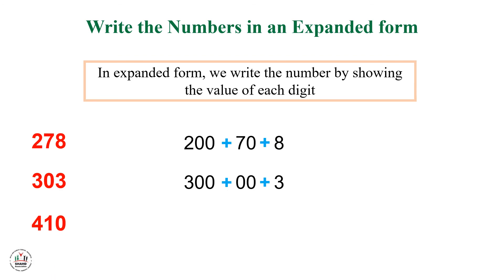And the last example: 410. The hundreds digit here is 4, so I will write 400. And the number of tens here is 1, or we can say 10, so I will write plus 10. And the number of ones here is 0, so I will write plus 0. So here we write the numbers in expanded form.